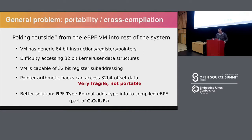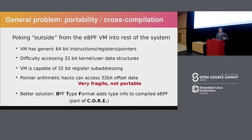The VM can do 32-bit sub-register addressing — if you fill just half of the register, you can dereference pointers to 32-bit addresses. But you'd have to do that with custom pointer arithmetic, which you don't want in restricted C. This is an area heavily under development right now. There's a project called CORE — Compile Once, Run Everywhere — which tries to make eBPF portable by adding a type system to eBPF.